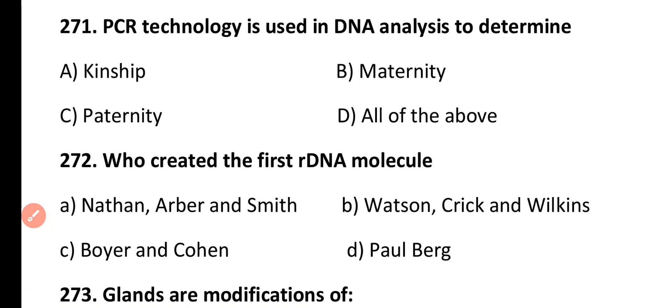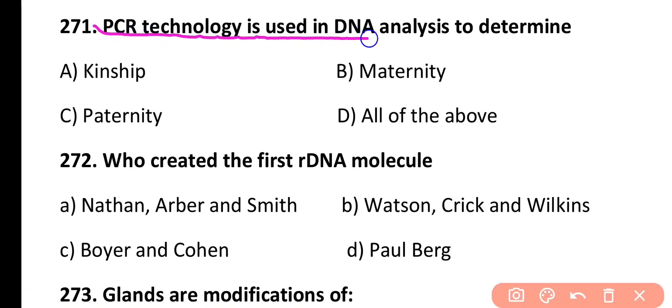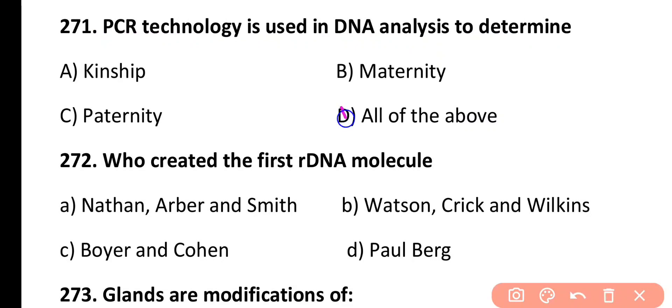Question 271. PCR technology is used in DNA analysis to determine: kinship, maternity, paternity, or all of the above. Correct answer is Option D. Through PCR technology we can determine kinship, maternity, and paternity.